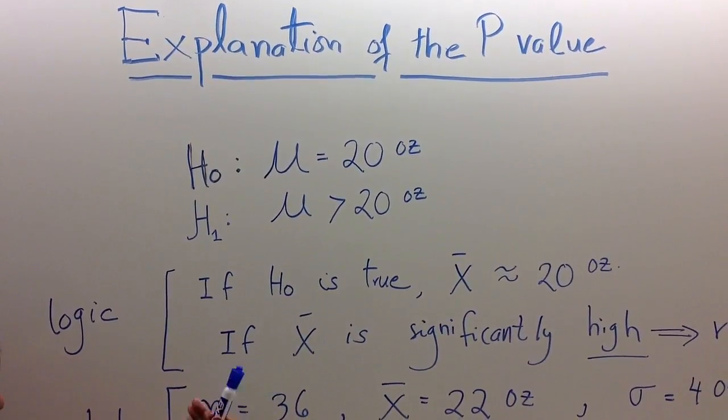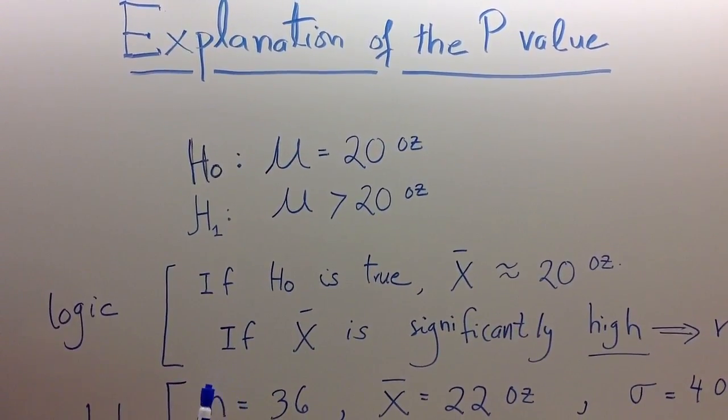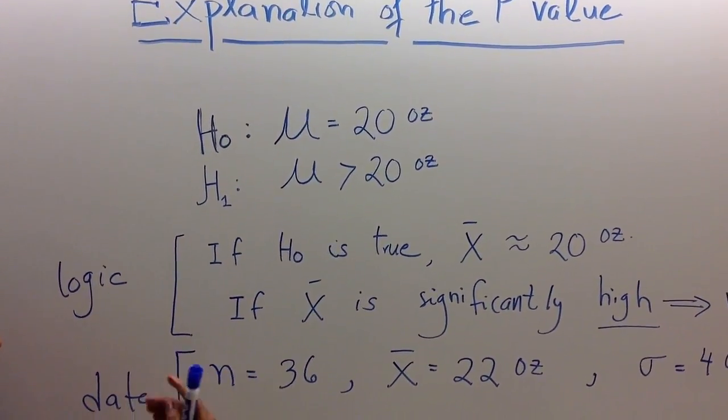Perhaps a company manufactures a product, and it is believed that the mean weight of a product is 20 ounces.